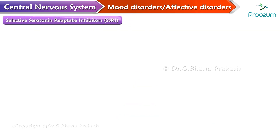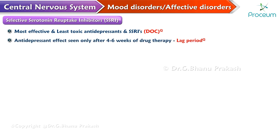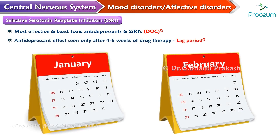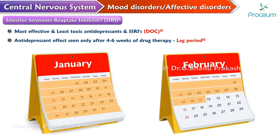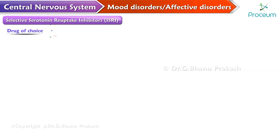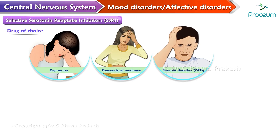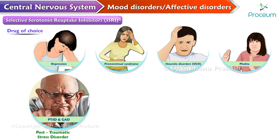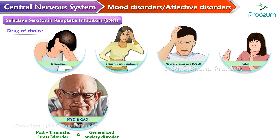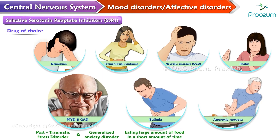Selective serotonin reuptake inhibitors. The SSRIs are the most effective and least toxic antidepressants and hence are the drugs of choice currently. The antidepressant effect of SSRIs is seen only after a period of four to six weeks of drug therapy, and this period is called the lag period. SSRIs are the drug of choice for treatment of depression, premenstrual syndrome, and neurotic disorders like obsessive-compulsive disorder, phobias, post-traumatic stress disorder, generalized anxiety disorder, bulimia, and anorexia nervosa.